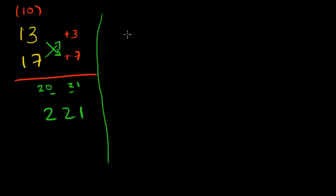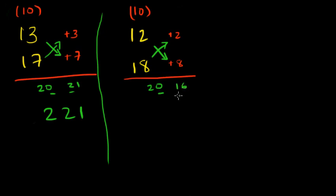Let's do 12 and 18. So the base is 10, and this is plus 2, and this is plus 8. And what are we going to get? 12 plus 8, or 18 plus 2, you get 20, and 2 into 8 is 16. So you're going to take this 0, and this 1, add them. And the answer is 2, 1, 6.